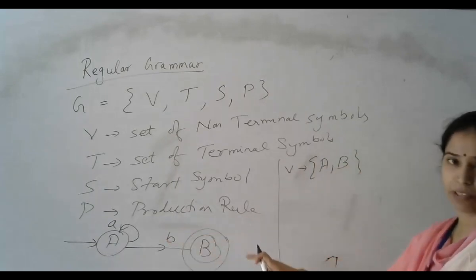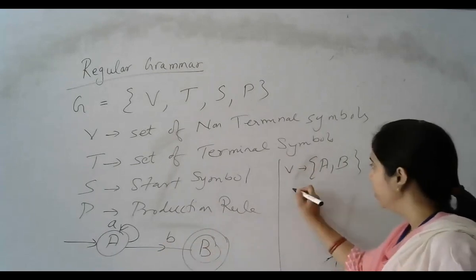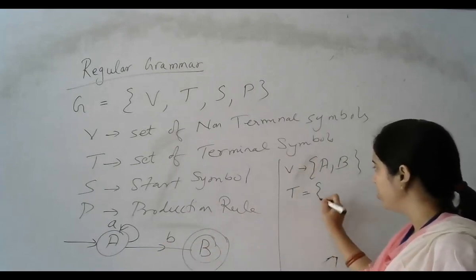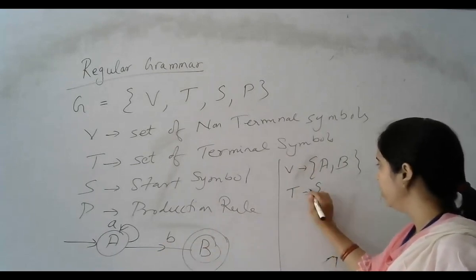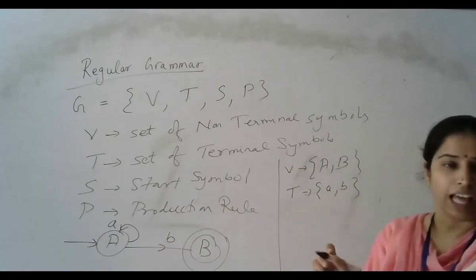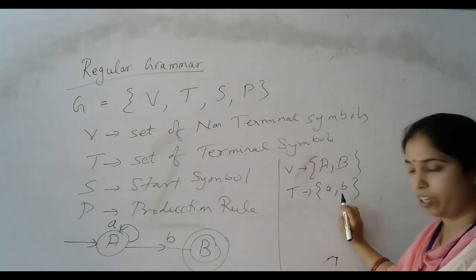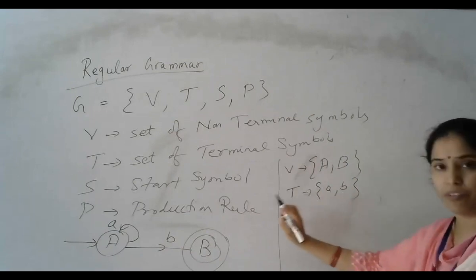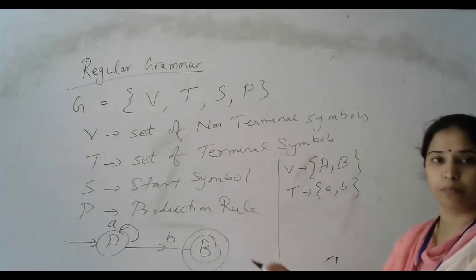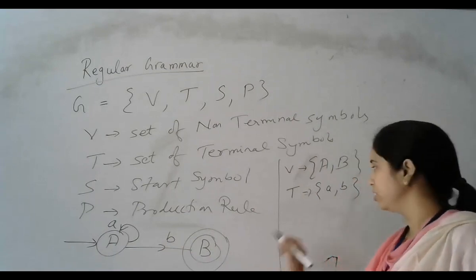Non-terminals are represented by capital letters A and B. T are the terminals, so T contains small a and b. We can say these are the inputs of the DFA. And these are the terminal symbols. We can represent the terminal symbols in small letters.